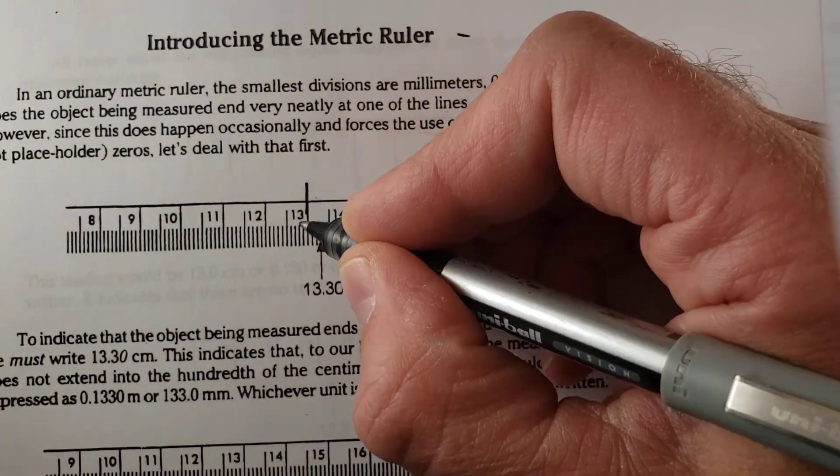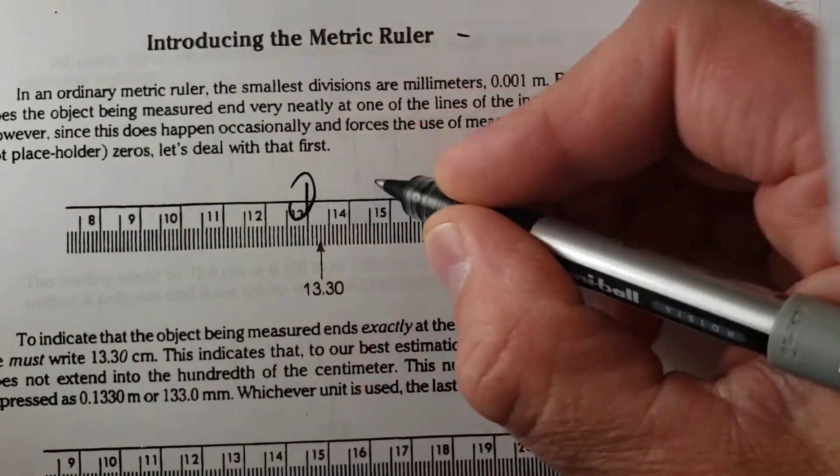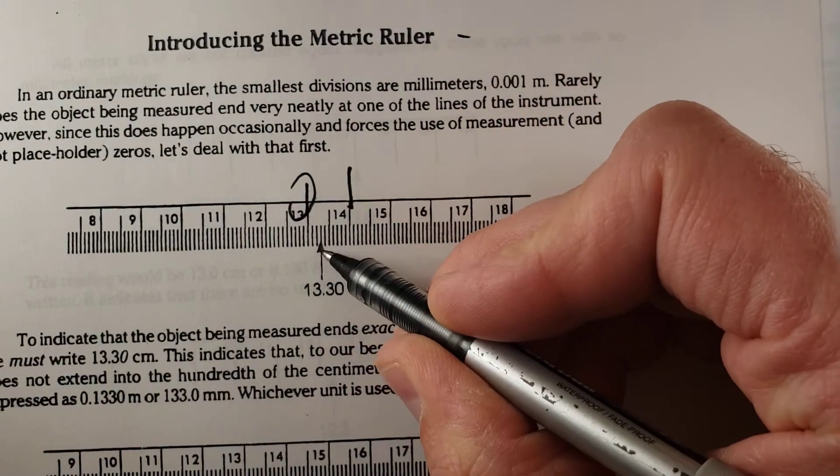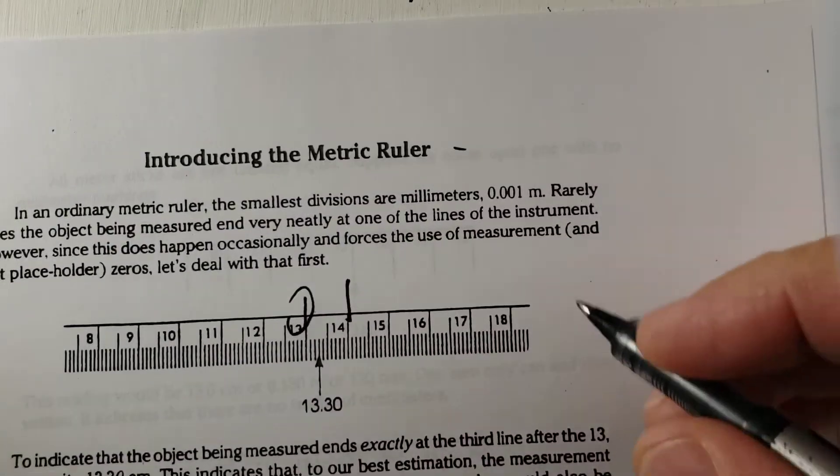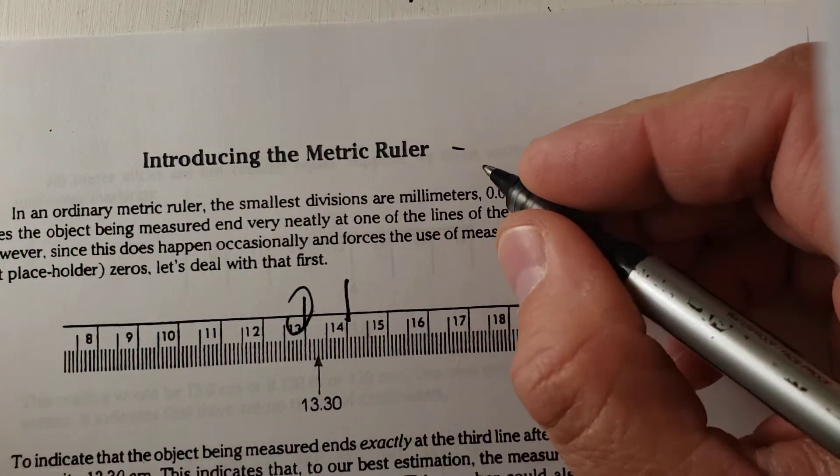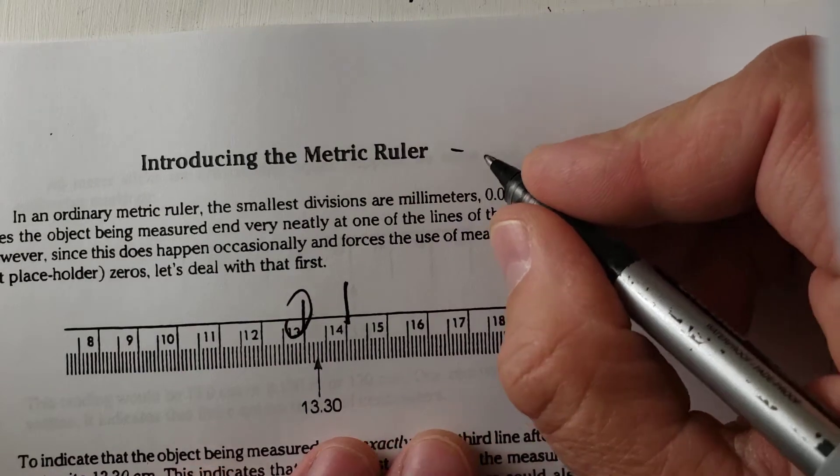So if you look at this, this 13 pertains to this number here, and this is 14. You can see that the measurement will either be on a line or in between a line. And if it's in between, we consider it to be exactly halfway.